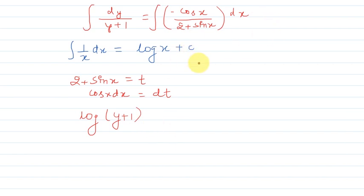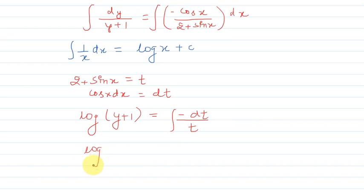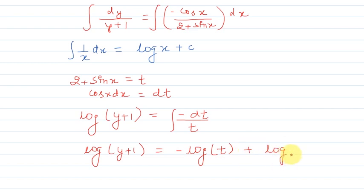तो left hand side का integration log(y + 1) हो जाएगा। Right hand side पर minus dt/t बचता है, जो -log t हो जाएगा, यानी -log(2 + sin x) plus C। Integration constants को combine करके एक constant C देंगे।